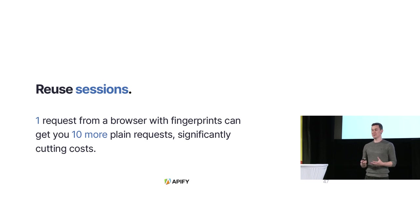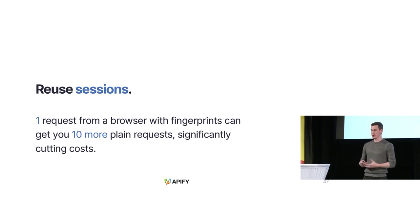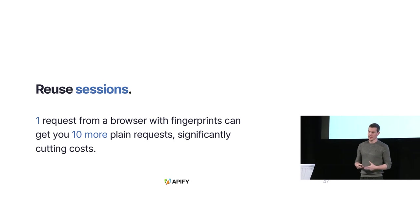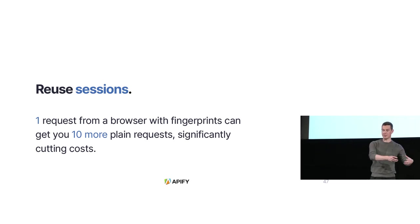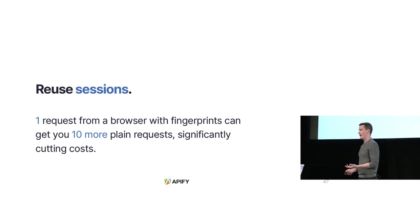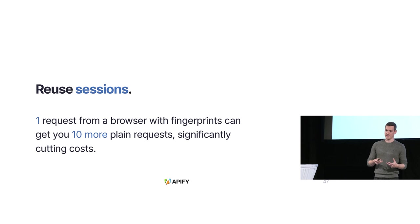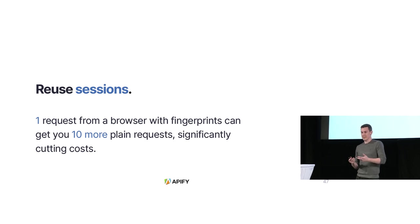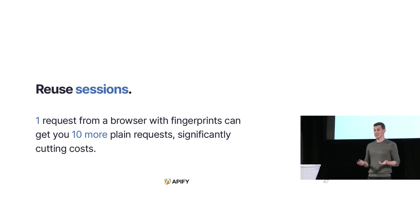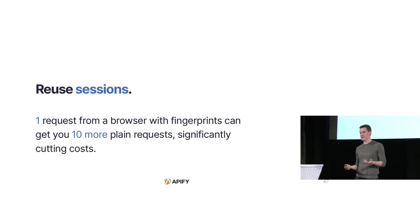Third: reuse sessions. A website will typically let a browser in, so you open the website with your browser and correct fingerprints, the website sends you cookies and tokens, and you can then take those and use them in your HTTP client without the browser. Most of the time it works — sometimes for two requests, sometimes for 100. Websites often don't re-check whether you're a bot after authenticating you. So instead of making 100 requests through a browser, you might only need 10 through the browser and 90 through an HTTP client, which is much cheaper.